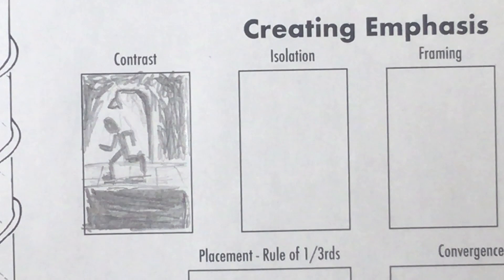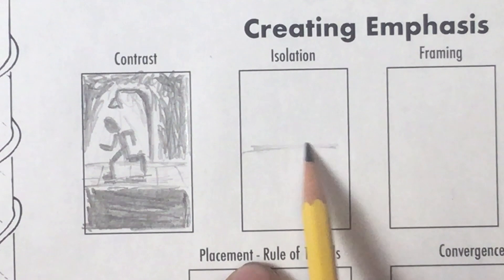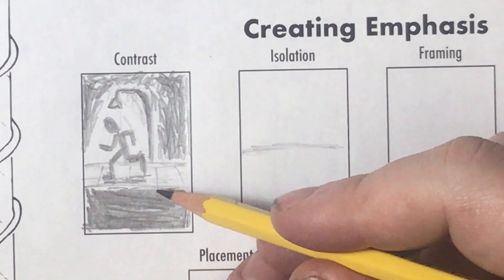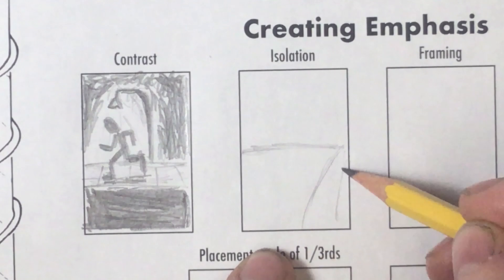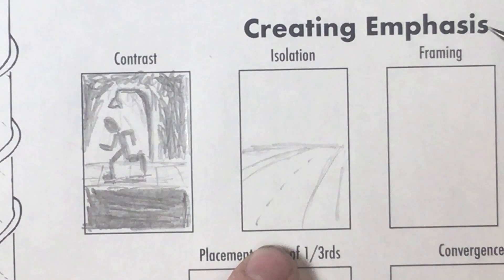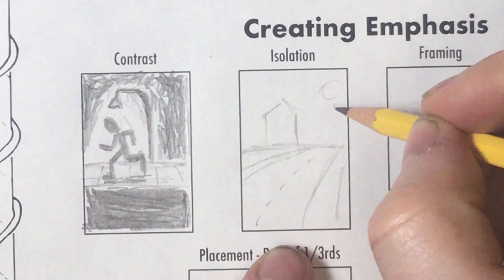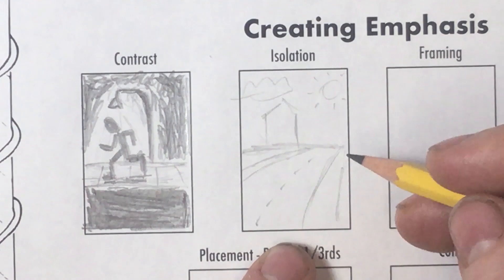Follow along as I show you another way to create that same isolation. Let's make an outdoor scene with a horizon — maybe a sidewalk here and a road in the middle, then another sidewalk on the other side. We could throw in some extra details, like maybe a house over here, the sun shining in the sky, maybe a cloud. But to create the feel of isolation, we're going to have one person on this sidewalk and then a group of people on that sidewalk.